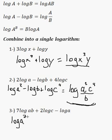it's going to become log a to the 7, b to the 7, plus log c squared minus log a.